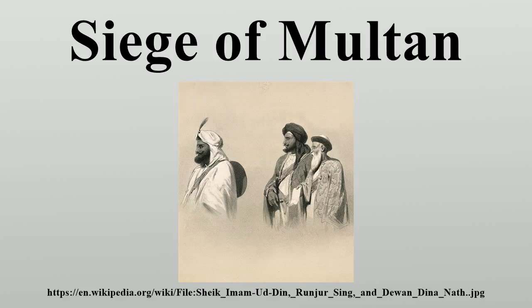They were engaged by Mulraj's artillery and forced to take cover for several hours. Mulraj's infantry and cavalry began to advance, but Edwards was reinforced by two regiments of the former Khalsa under Colonel Van Cortlandt, an Anglo-Indian soldier of fortune. Van Cortlandt's artillery caused heavy losses among the Multan troops and Edwards's Pashtuns counter-attacked. Mulraj's forces retreated to Multan, having suffered 500 casualties and lost six guns.